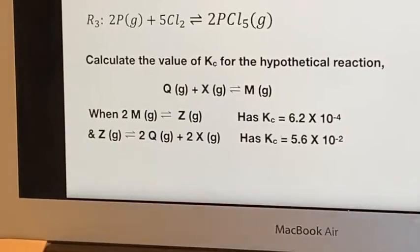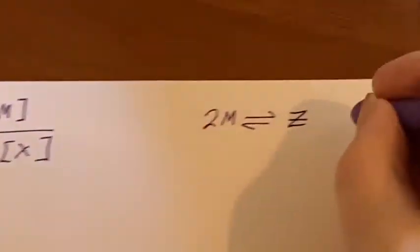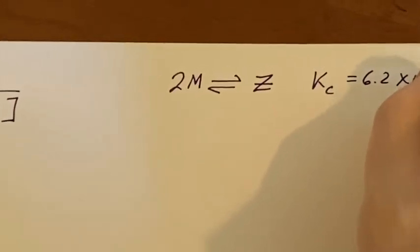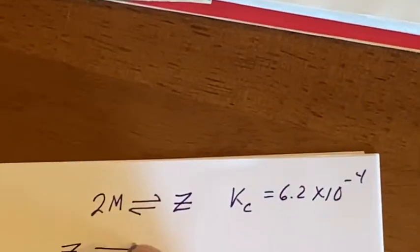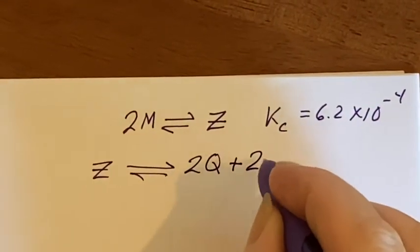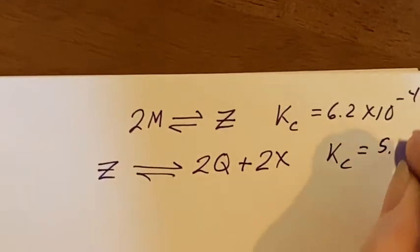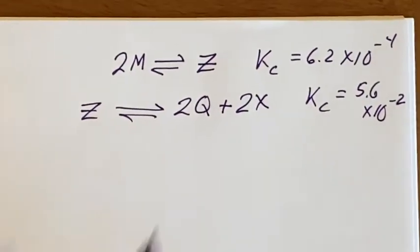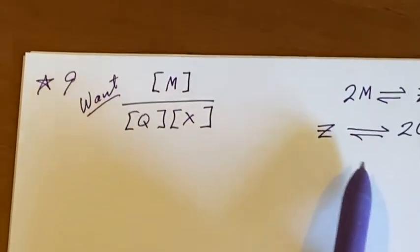I've been given that 2M will be in equilibrium with Z and that would have a Kc value of 6.2 times 10 to the negative fourth. I have also been given that Z can be in equilibrium with 2Q plus 2X and that would have a value of 5.6 times 10 to the negative 2. How am I going to get from this to what they were talking about, the Q plus X equals M?